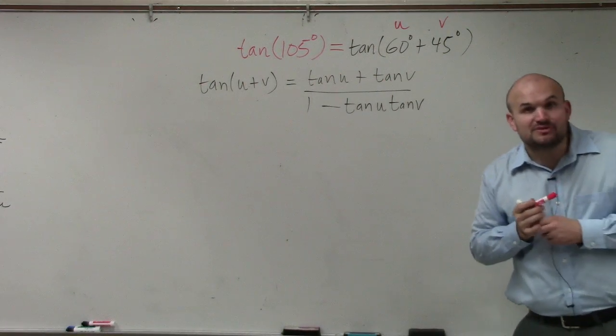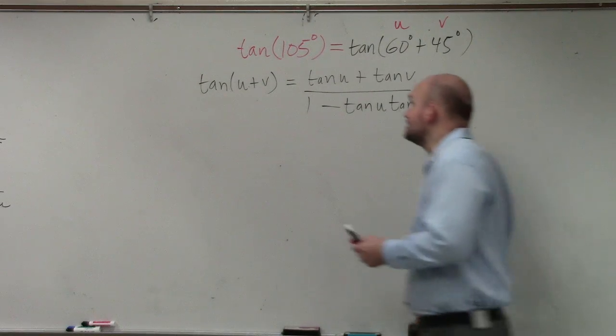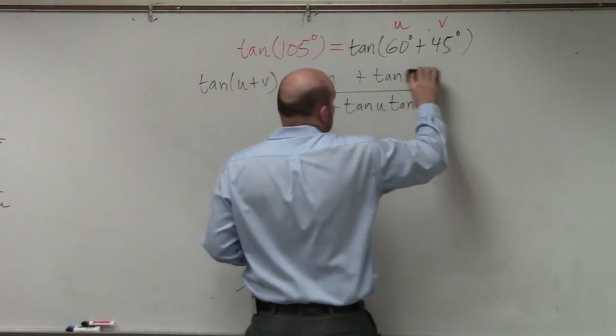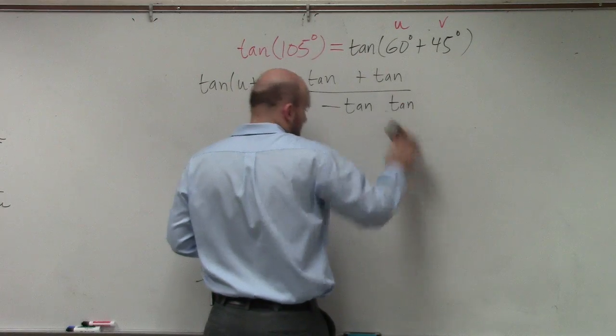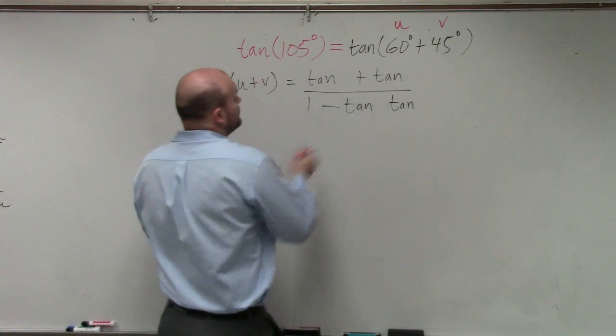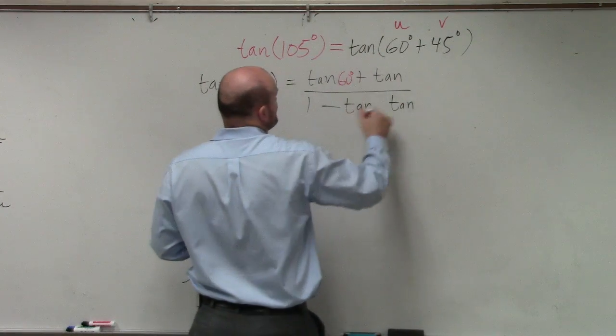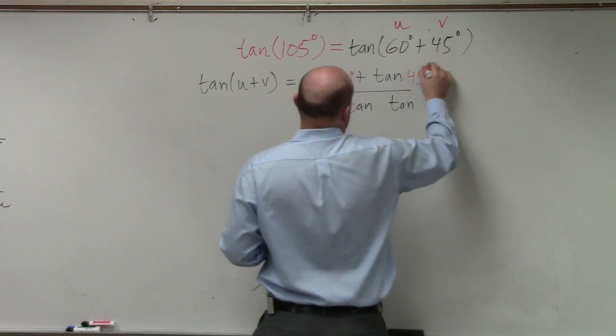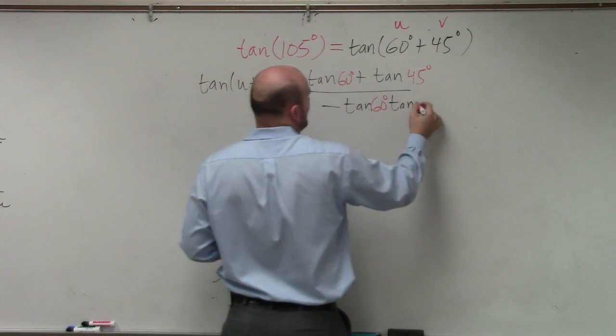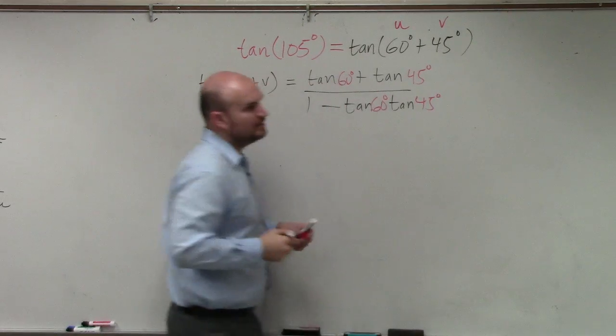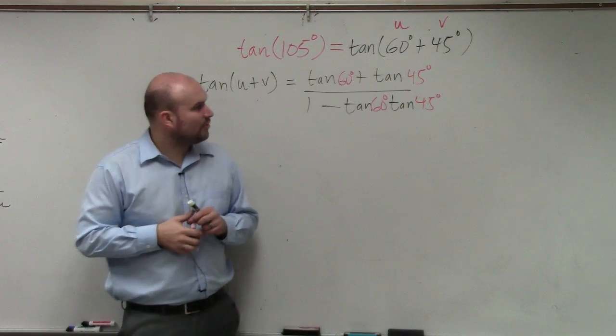Now that I've identified them as u and v, I basically just plug them into my formula. So to save a little space, I'm just going to plug them in. So it was u, which is 60 degrees, v, which is 45 degrees, u, 60 degrees, and v, 45 degrees. Now, the majority of students got to this point.